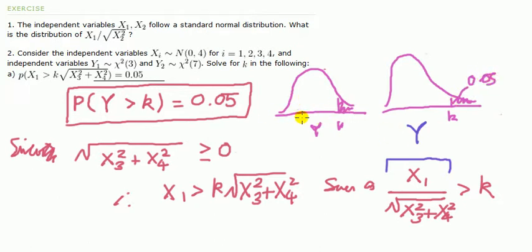So we need to know what the distribution of Y is. But even before we can know what the distribution of Y is, we have to rewrite this question. On the left-hand side of the inequality you've got a random variable, but on the right-hand side you've got also a product of a constant with a random variable, so they're jumbled up.